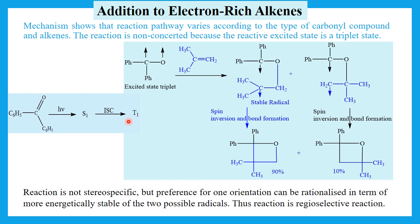The mechanism shows that the reaction pathway varies according to the type of carbonyl compound and alkene. Addition of aliphatic or aromatic ketones to electron-rich alkenes involves attack on the ground-state alkene by the n to π* triplet state of the carbonyl compound in a non-concerted manner. Here are two possible isomers of oxetane which are produced.